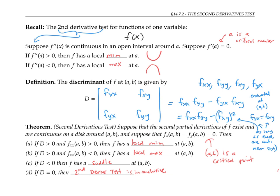Although I won't prove the second derivatives test in this video, I do want to talk about why it's plausible. Suppose the discriminant is positive and f sub x,x is greater than zero. If f sub x,x is positive and the whole discriminant is positive, then f sub y,y will have to be positive also, since otherwise we'd end up with a negative discriminant. f sub x,x being positive is like saying our function is concave up as we go in the x direction, and f sub y,y being positive is like saying it's concave up in the y direction. So it's plausible that the function is concave up in every direction and has a local minimum.